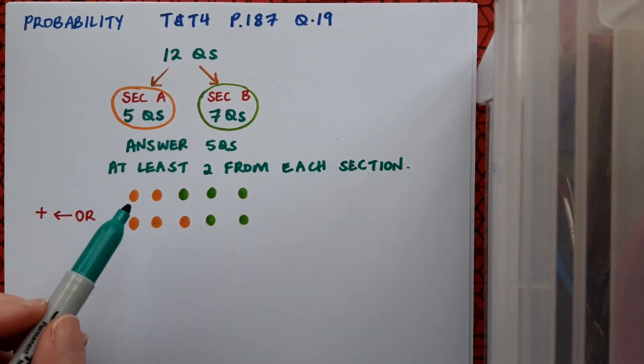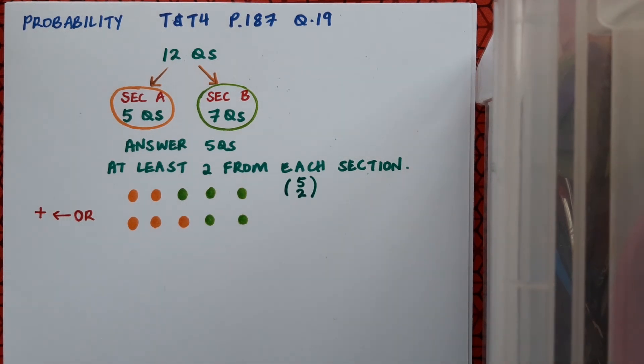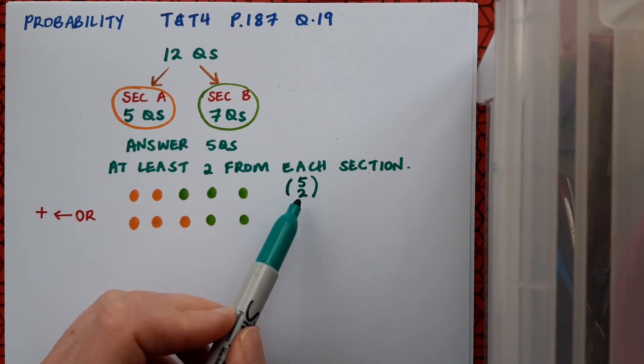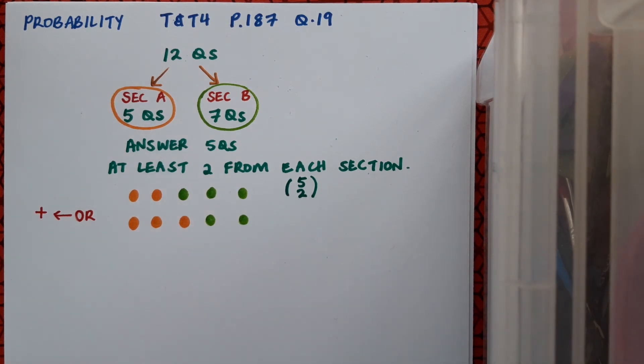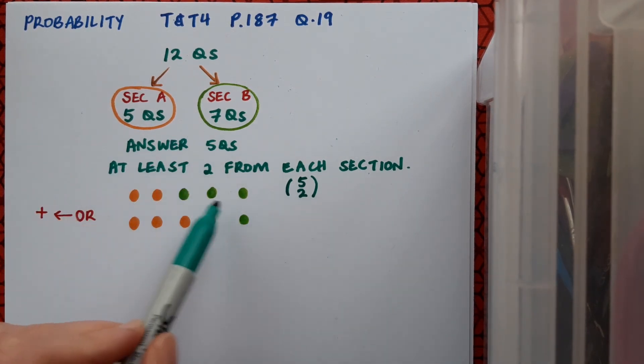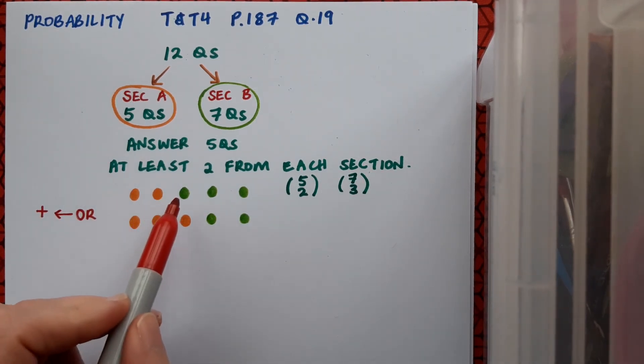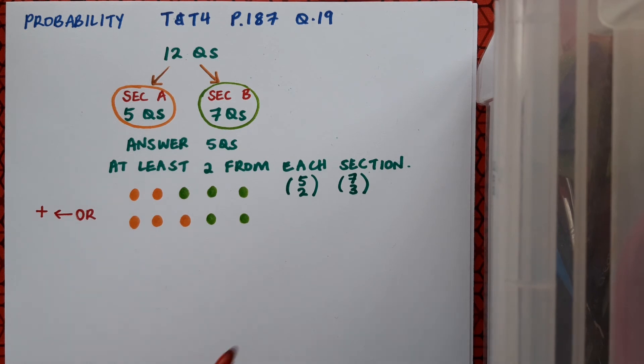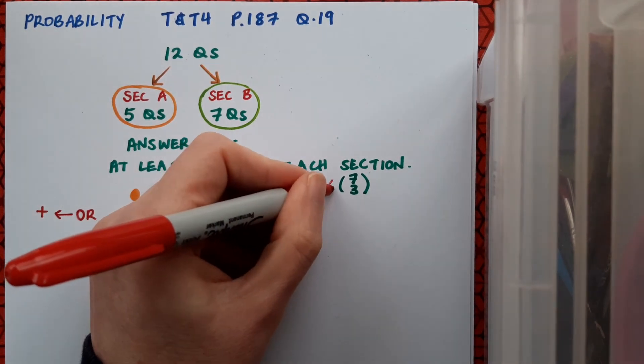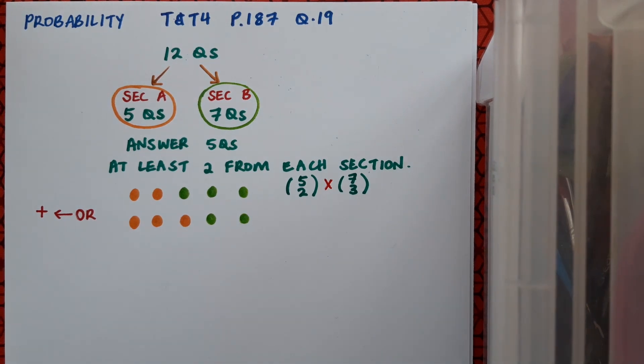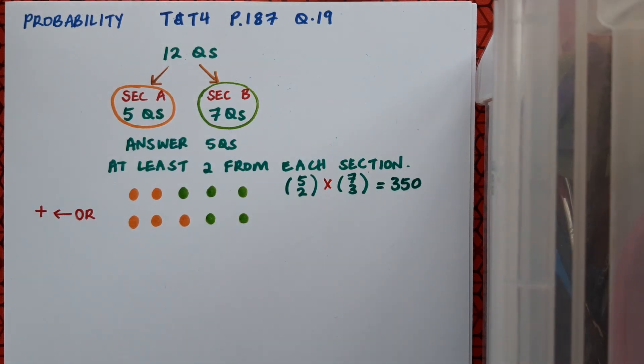Now let's work out the number of different ways these can happen. For the first option, I have to choose two questions from section A and three from section B. That's 5 choose 2 for section A and 7 choose 3 for section B. Since I need two from section A AND three from section B, I must multiply those calculations together. Go to your calculator and work that out, and you should get 350.